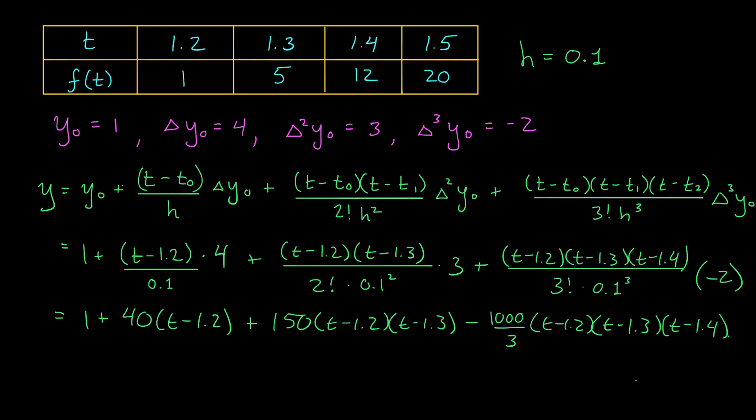To wrap up this problem, let's remember what the problem was asking for. It didn't want the interpolating polynomial, it wanted an estimate for the hedgehog's speed at t equals 1.35 seconds. So what we can do is plug in t equals 1.35 to the polynomial.